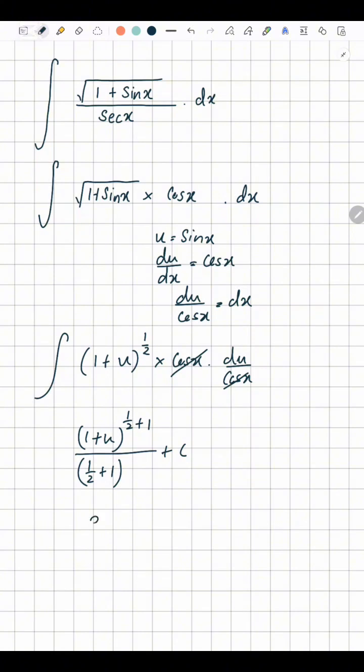So our final answer is (2/3)(1 + sin x)^(3/2) + C. This is your final answer.